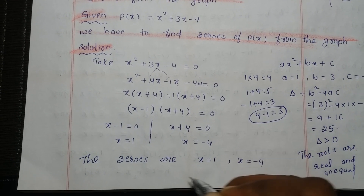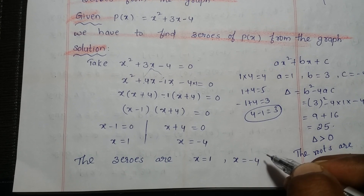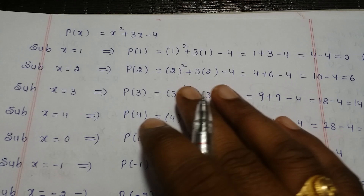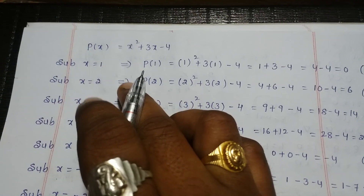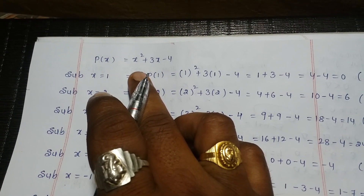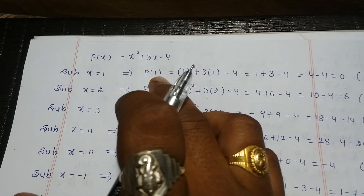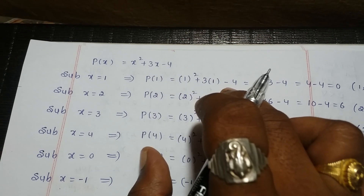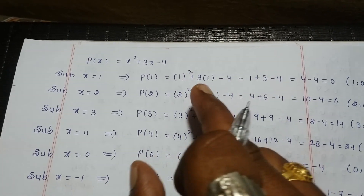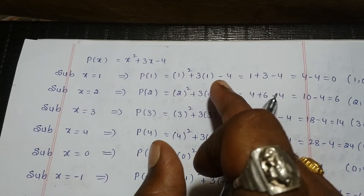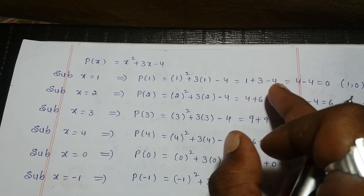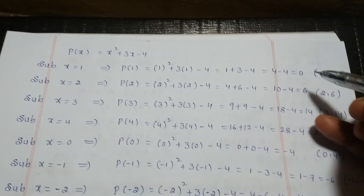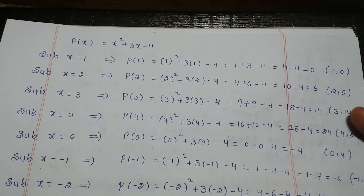The graph touches the x axis at x is equal to 1 and x is equal to minus 4. Verification: p of 1 equal to 1 square plus 3 into 1 minus 4. 1 plus 3 is 4, and 4 minus 4 is 0. So substituting x is equal to 1 we get the point 1 comma 0.